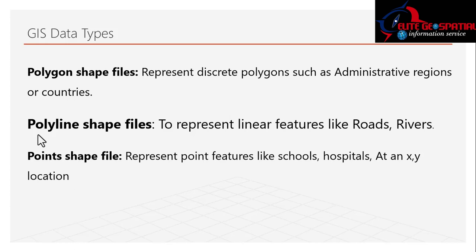Polylines are used to represent linear features like roads and rivers. Finally, we have the point shapefile, which represents point features like schools. For example, if you're working on a points map, you identify schools, hospitals, police stations, and markets within a location like Zaria. These are stored as X and Y coordinates — your longitude/easting and latitude/northing.